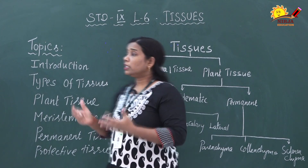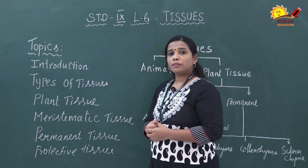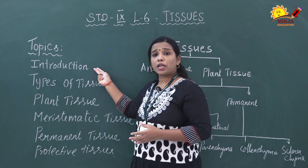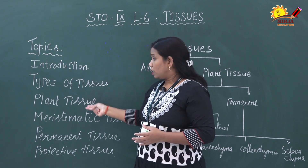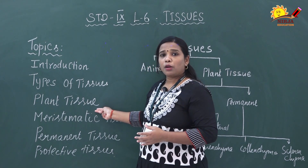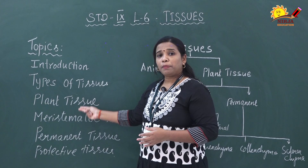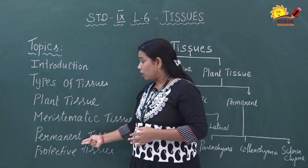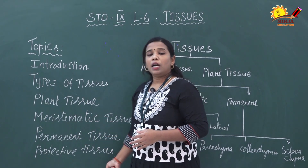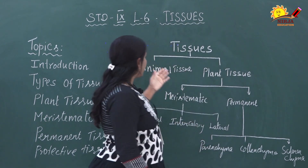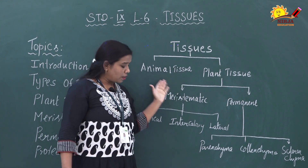In this chapter, we are going to discuss these topics: the first is an introduction about tissues, then types of tissues, and then plant tissue. Particularly in this video we will discuss plant tissues, which are classified into two categories: meristematic tissue and permanent tissue. We will discuss this with a flow chart later.